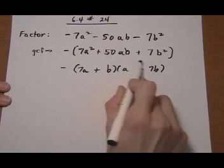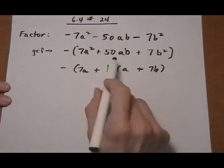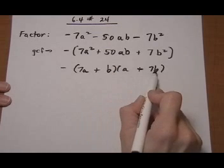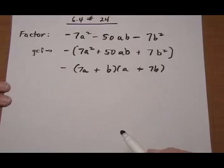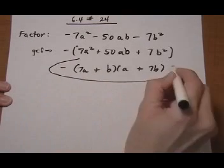7a squared plus 49ab plus ab is 50ab plus 7b squared. With a minus in front would make everybody negative and give us back the original. So that one works.